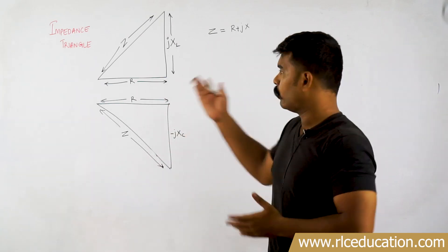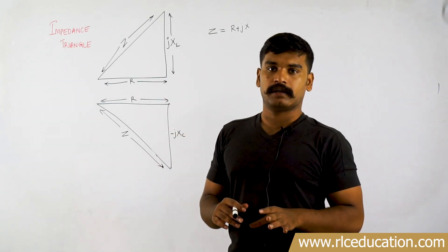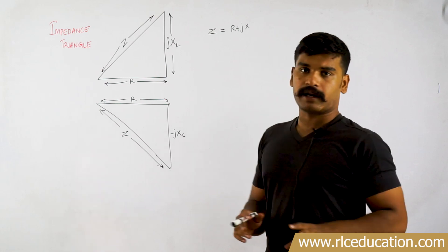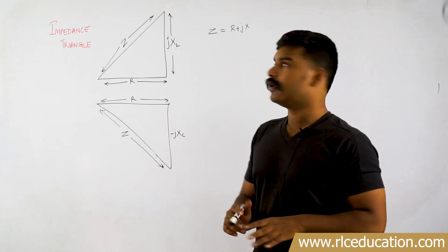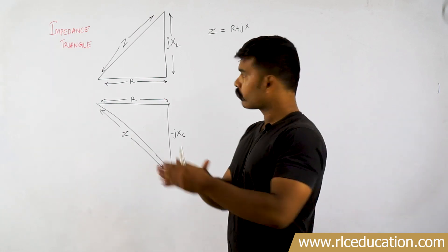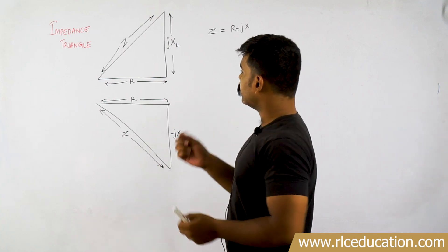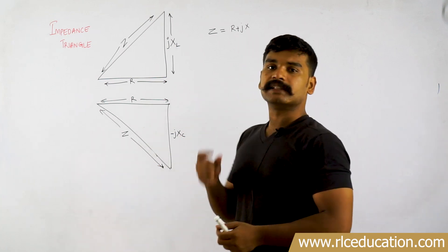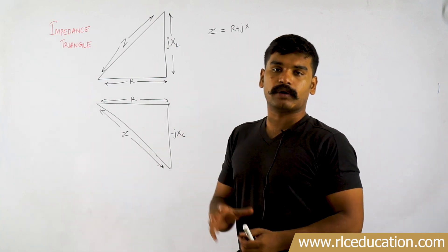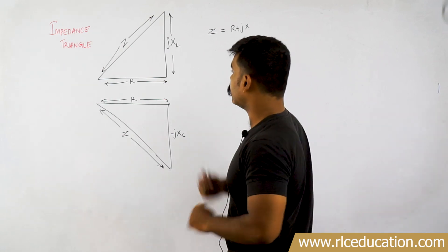What you are seeing now on the board is an impedance triangle. This impedance triangle is basically a right angle triangle. In this impedance triangle, we will represent the resistance, impedance, and reactance as three corners or three sides of a right angle triangle.